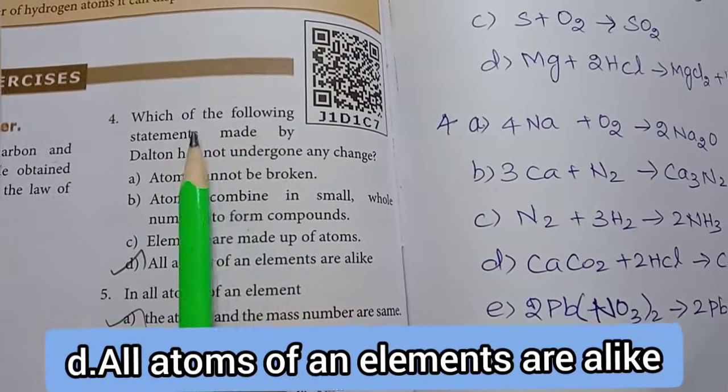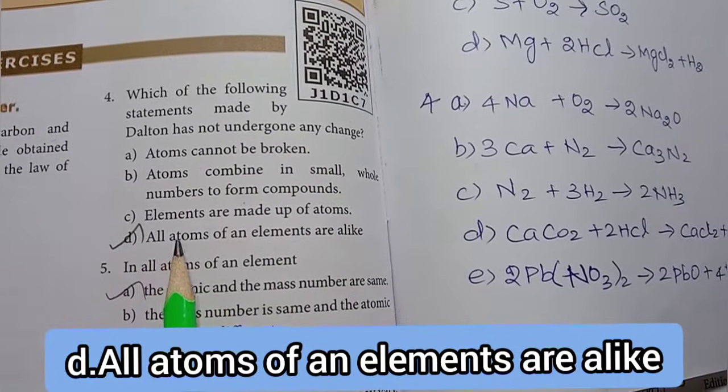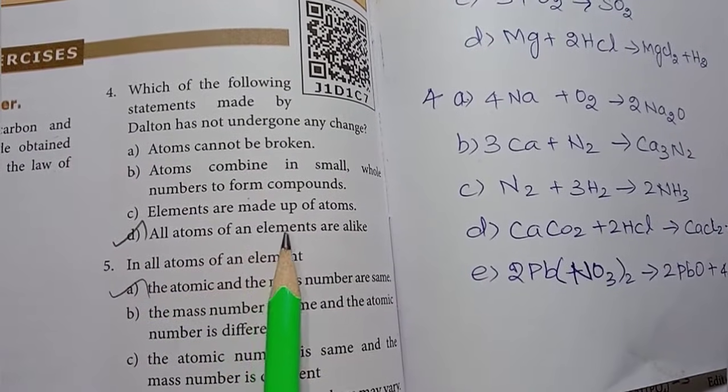Fourth one: Which of the following statements made by Dalton has not undergone any change? Option D, all atoms of an element are alike.